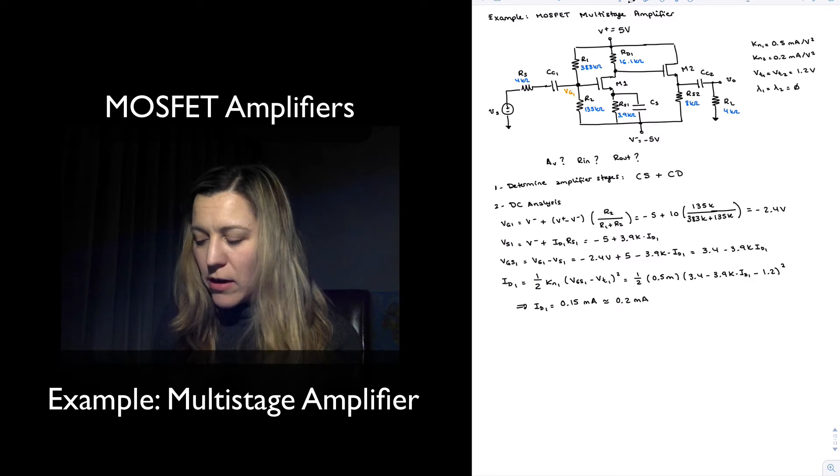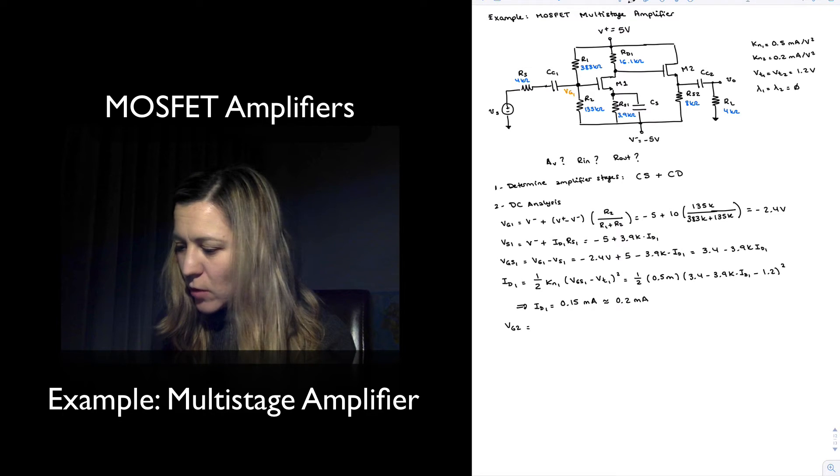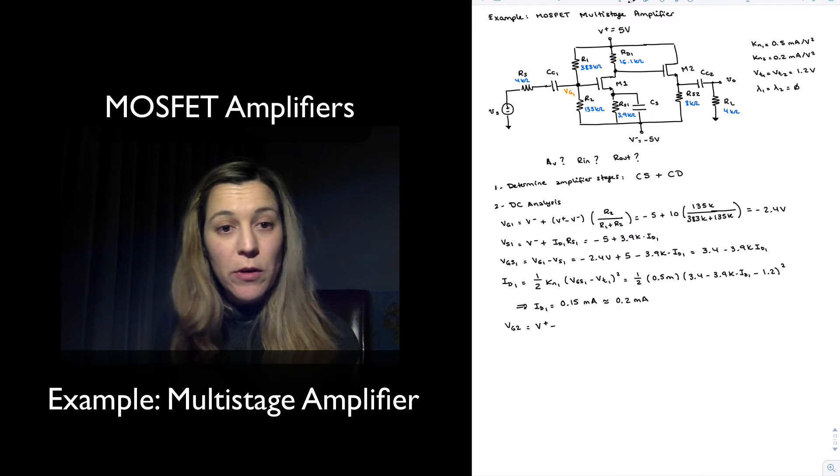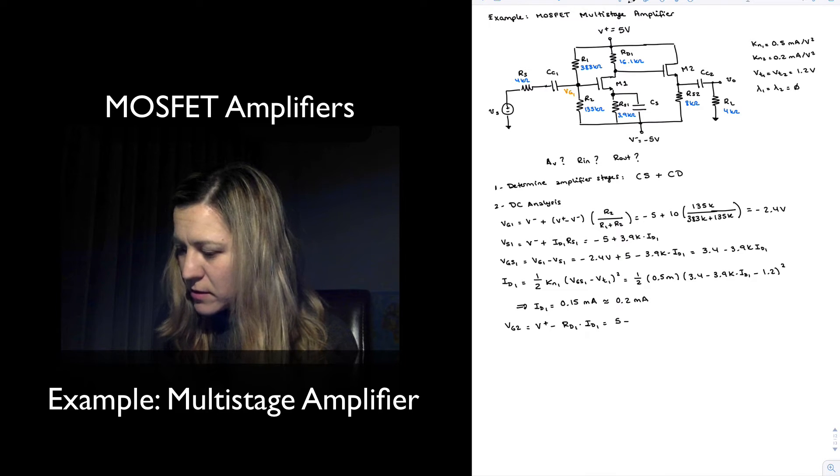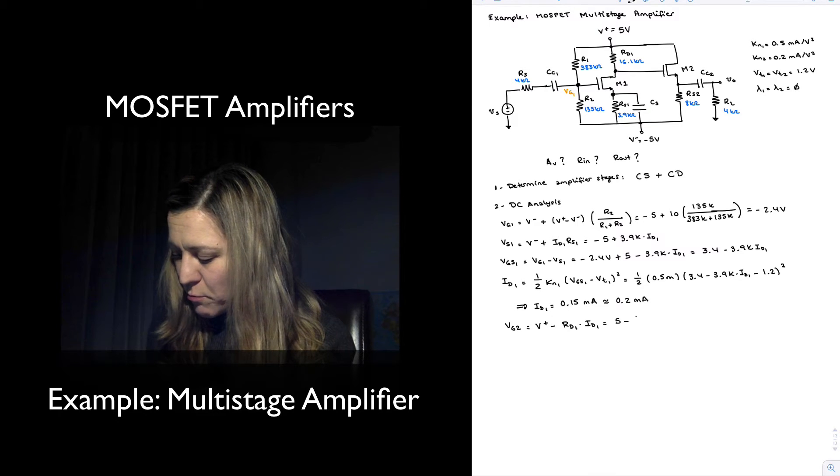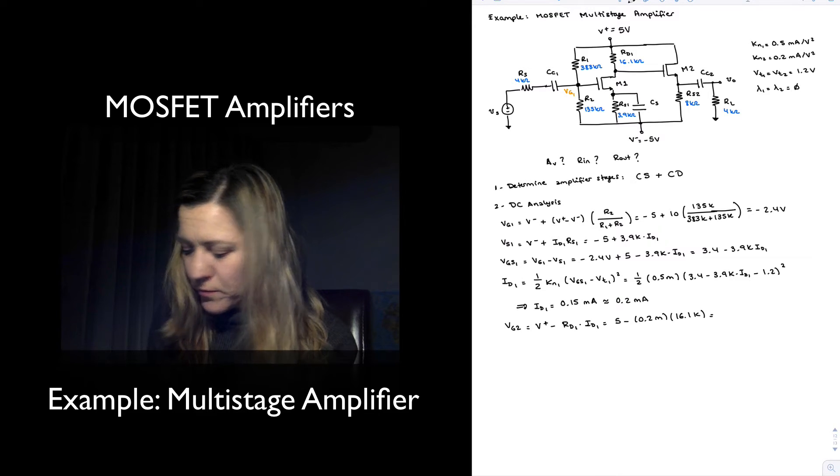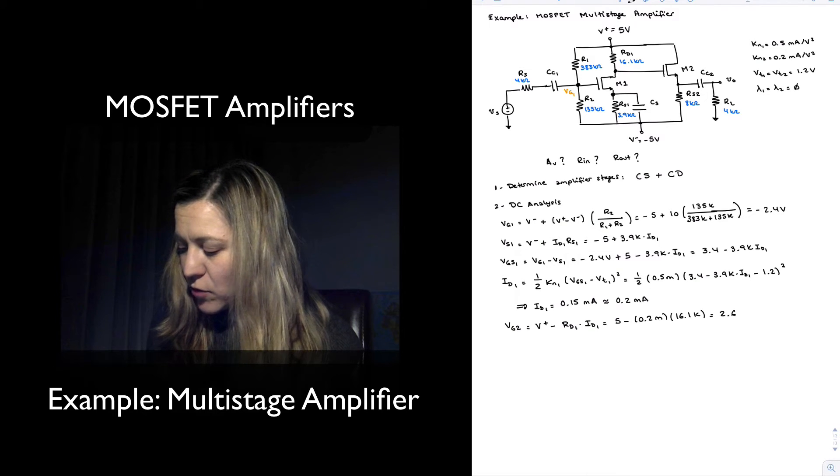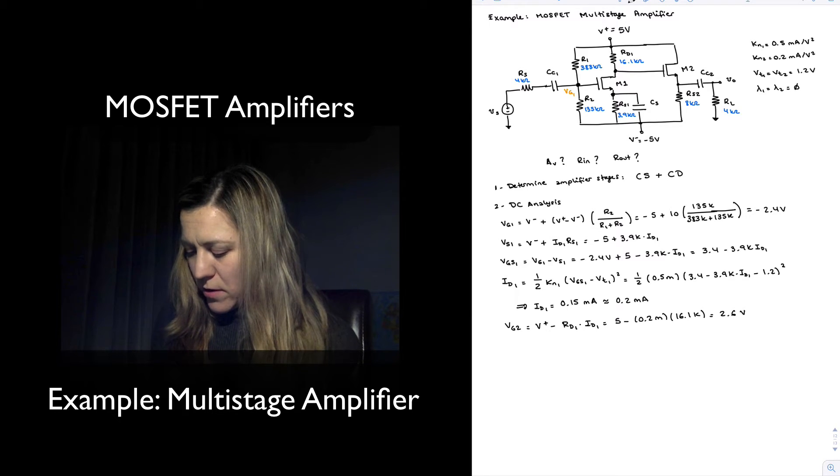With that, I can now calculate the value for VG2, which is equal to V plus minus the voltage drop across RD1, which is RD1 times ID1, or 5 minus 0.2 milliamps times 16.1k, which gives me 2.6 volts.